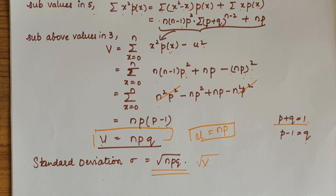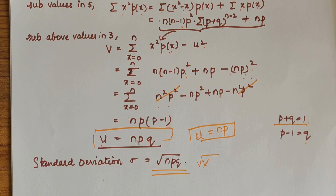I hope you have understood how we derived the mean and variance of binomial distribution. If you have any doubts, please let me know in the comments. Do subscribe to my channel. Thank you.